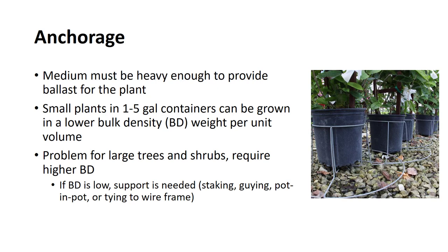This is a particular problem for the production of larger trees and shrubs. Small plants produced in 1–5-gallon containers and spaced pot-to-pot can be grown in a medium of low bulk density — weight per unit volume. However, large, tall plants grown on wider spacings require a medium of higher bulk density. When the plants are large and the bulk density of the medium is low, some other form of support is necessary, such as staking, guying, pot-to-pot production, or tying to a wire frame.